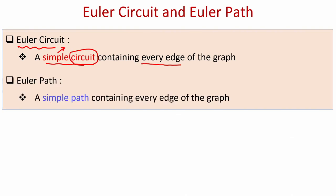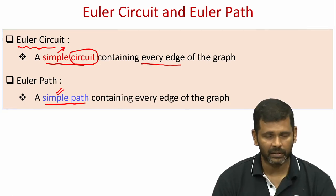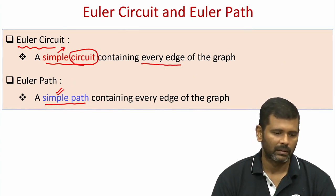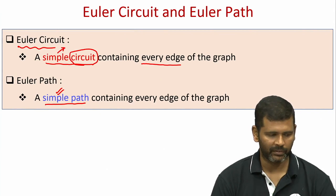An Euler path is a simple path which contains every edge of the graph. The difference between Euler path and Euler circuit is that in an Euler path the starting point and end point are not the same, because it is just a path. However, it is still simple and edges are not allowed to be repeated, whereas in an Euler circuit edges are also not repeated but the starting and ending point must be the same.